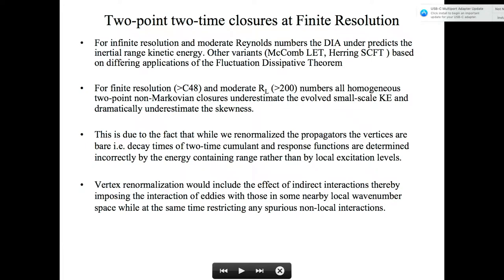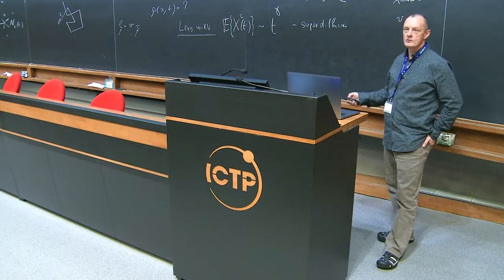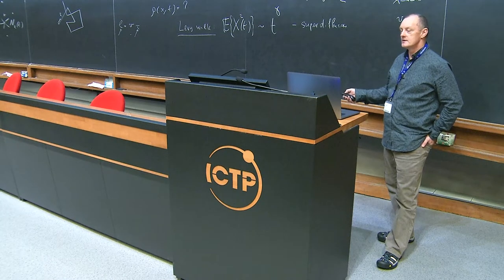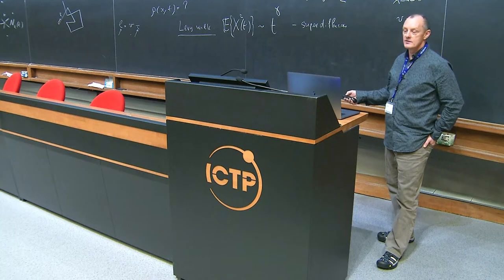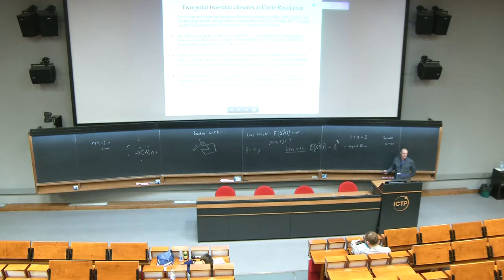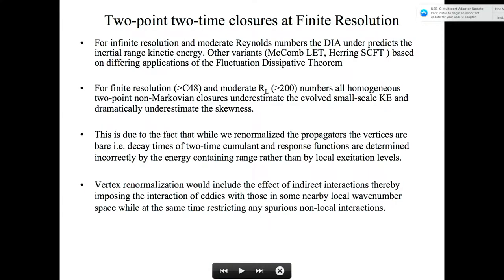For infinite resolution and moderate Reynolds numbers, the DIA under-predicts the inertial range kinetic energy, as do the other variants such as the LET theory and self-consistent field theory. I'll show that these three closures are actually based on differing interpretations or applications of the fluctuation dissipation theorem. For finite resolution and moderate Reynolds number, all of these homogeneous two-point Markovian and non-Markovian closures underestimate the small-scale kinetic energy and dramatically underestimate the skewness. This is because the propagators are renormalised but the vertices are bare, and the decay times of the two-time cumulant response functions are determined incorrectly by the energy-containing range rather than by local excitation levels. Vertex renormalisation would include damping effects and indirect interactions, imposing interaction of eddies with those in nearby local wave number space while restricting spurious non-local interactions.